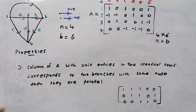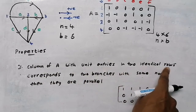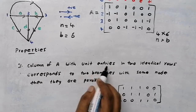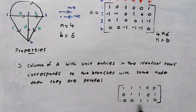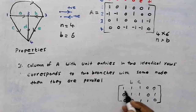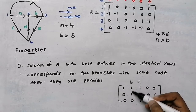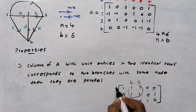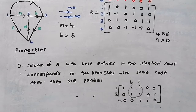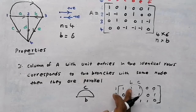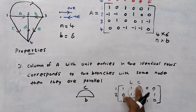Property 3: if a column of the incidence matrix has unit entries in two identical rows corresponding to two different branches, then those two branches are in parallel. That means if branches b and c both have unit entries in the same rows — say row 1 and row 2 — then branch b and branch c are in parallel between nodes 1 and 2.